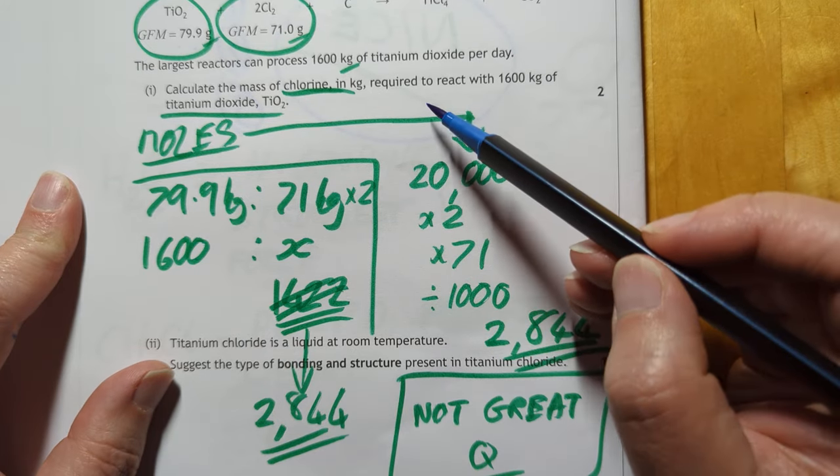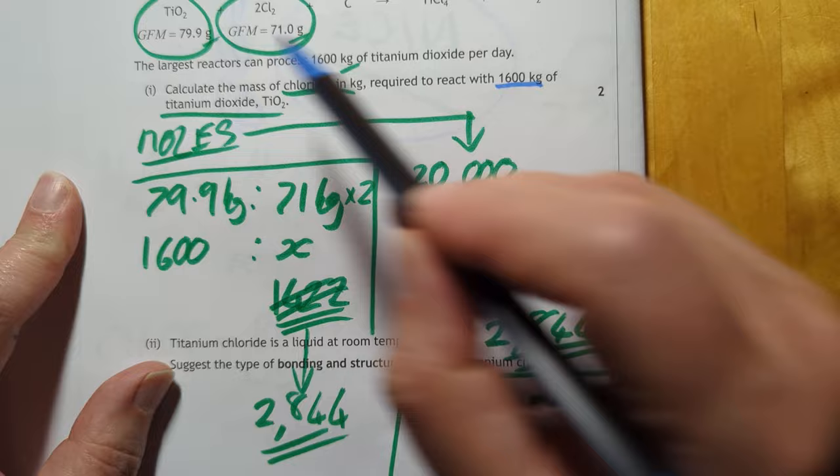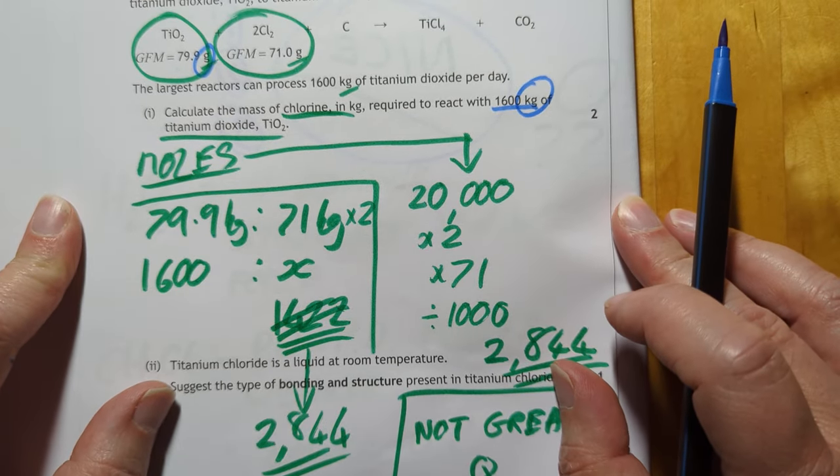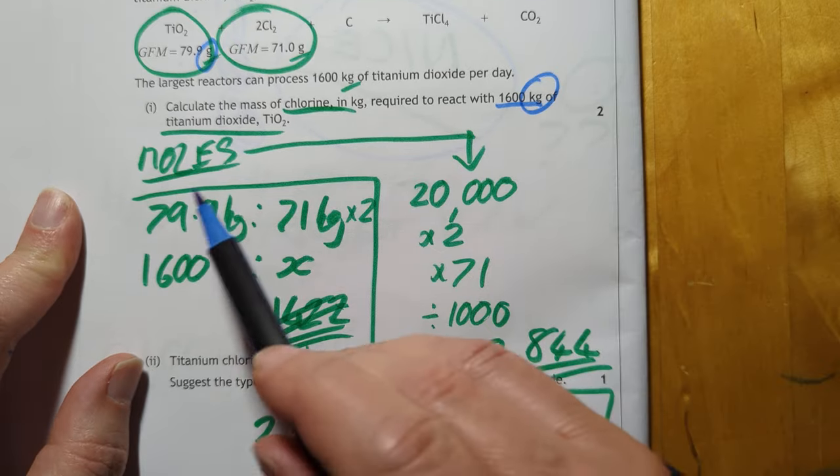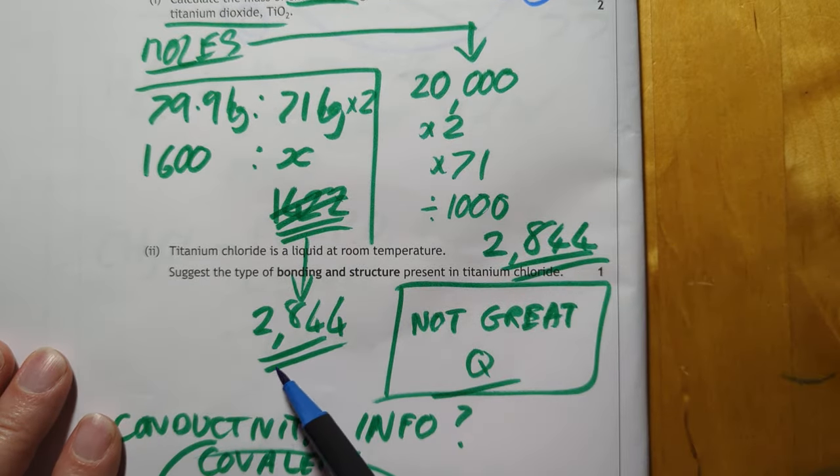The mass of chlorine in kilograms is 1600 kilograms. They're playing with units here aren't they? That's grams that's kilograms. You can do it by moles or you can do it by proportion you get the same answer either way.